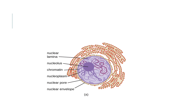Here you can see the different parts of the nucleus in the diagram: the nuclear envelope, nuclear pore, nucleoplasm, chromatin fiber, and nucleolus. All around you can also see the endoplasmic reticulum. We can observe all these parts in this diagram.